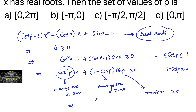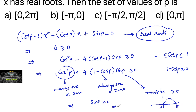This implies sin p ≥ 0. Since we know that sin is positive in [0, π], the set of values of p can be taken from 0 to π. So the answer is option number 4.